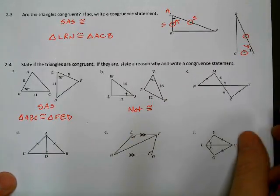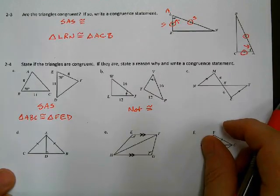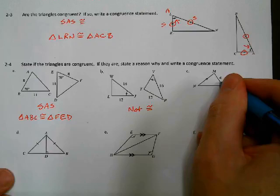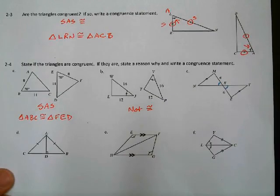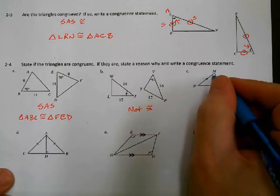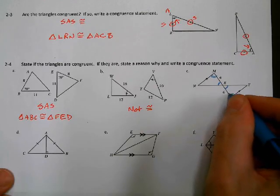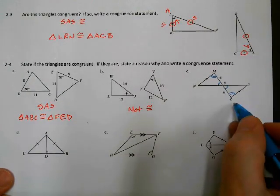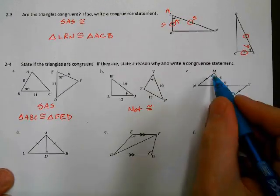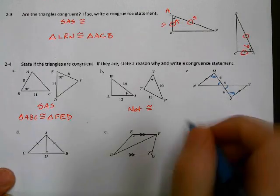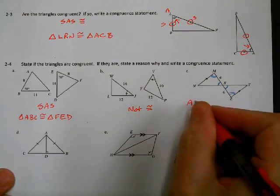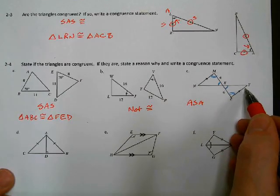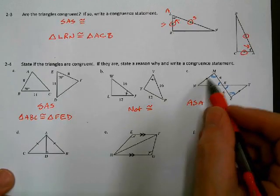This next one looks like we don't have enough information, but using angle properties from the last unit, we can figure it out. We have vertical angles, so those two angles must be congruent. And we have parallel lines, which means this angle and this angle are congruent because they are alternate interior angles — parallel lines with a transversal. So we now have Angle-Side-Angle. You could also have done Angle-Angle-Side, since angles N and Y are also alternate interior angles.